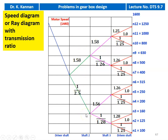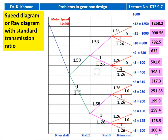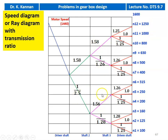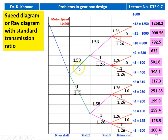All values are actual values. Now we have to standardize using the PSG data book, referring to pages 8.6 to 8.12, to take the standard speed ratio and corresponding number of teeth. Standardizing the number of gears allows us to identify the gear teeth and easily manufacture the gears. In the standard speed diagram, 1.58 remains 1.58, 1.56 is corrected to 1.58, 1.28 and 1.25 are corrected to 1.26, and 2.5 remains 2.5. The R40 series speeds are corrected to standard transmission ratios.